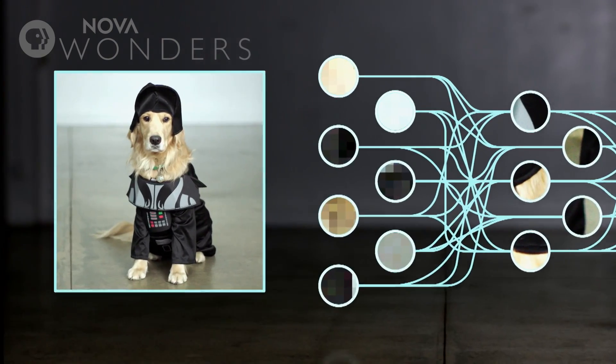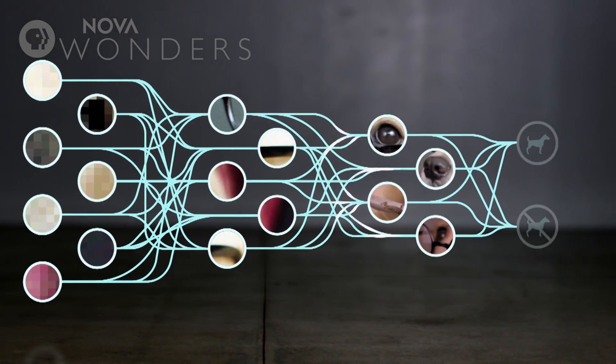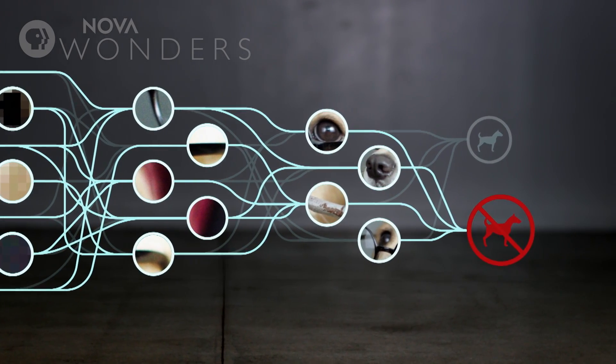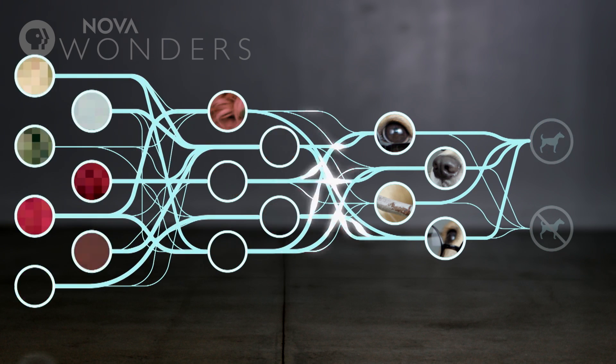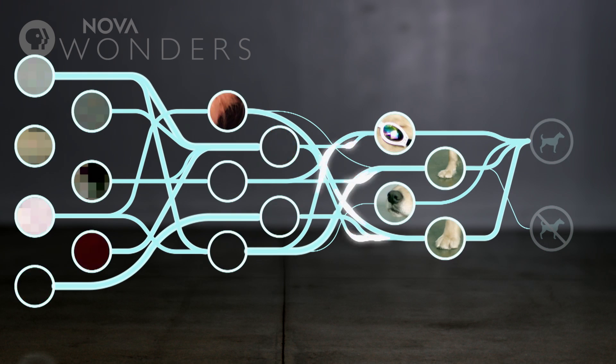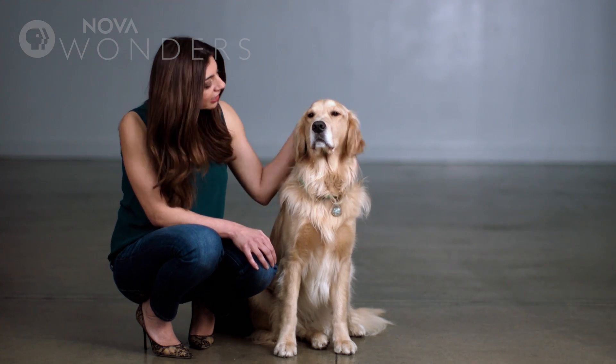But here's the kicker — and this is what's revolutionary about deep learning and neural networks. At first, the computer has no idea what it's looking at. It just responds randomly. But each time it gets a wrong answer, information flows backwards through the network saying you got the answer wrong, so anybody who is supporting that answer, your connection strength should get a bit weaker. Back and forth, it does this over and over again, until thousands of images later, the computer teaches itself the features that define dogginess.